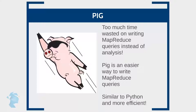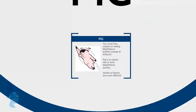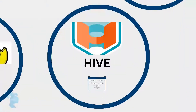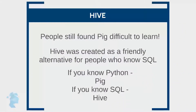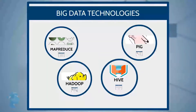Pig is essentially an easier way to write MapReduce queries. It is similar to Python and allows for shorter and more efficient code to be written, which is then translated to MapReduce before execution. While this solved the problem for many, some still found Pig difficult to learn. Since SQL is a language most developers are familiar with, people at Facebook created Hive as an alternative. Hive enables code to be written in Hive Query Language, which is very similar to SQL.